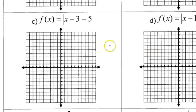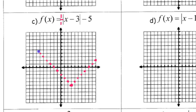Let's take a look at problem c. This will be right 3, down 5 — so that will be my vertex. There's no number showing here, so it will still be up 1 right 1. I'll do the mirror image of that for the left-hand side, just keep putting dots until you hit the edge of the grid. So this is what this function will look like.